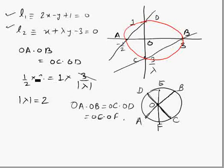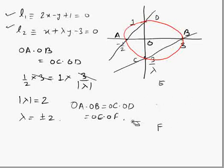Now, lambda can take values plus or minus two. Now in this question, if you just look at the diagram, lambda cannot be positive. Lambda has to be negative. So final answer is going to be lambda equals to minus two.